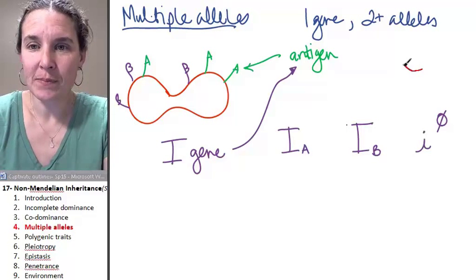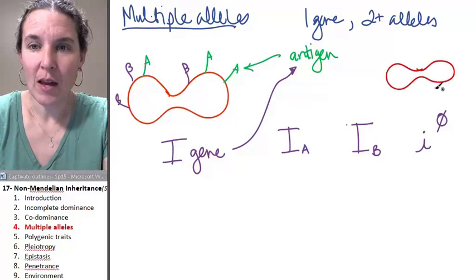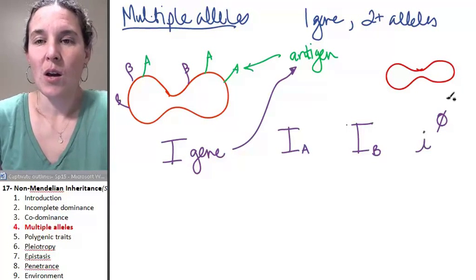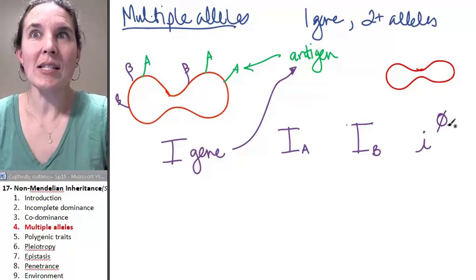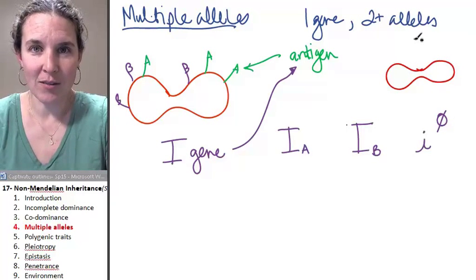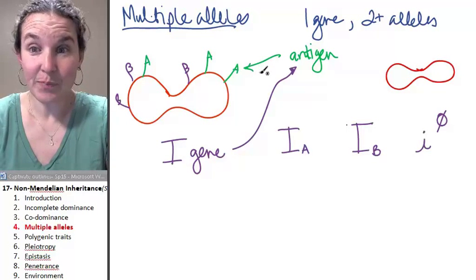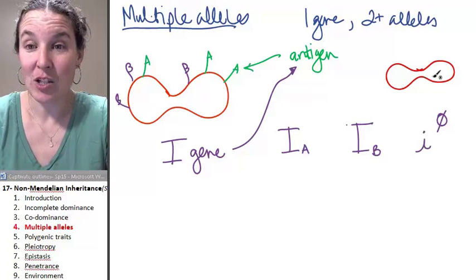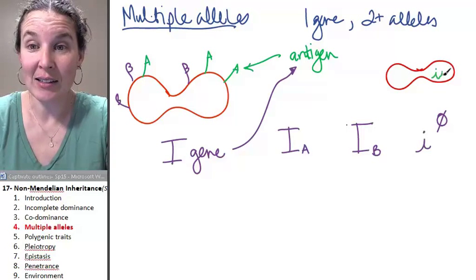I'm going to draw you a blood cell, and you tell me right now what is the genotype of this blood cell right here? Do you see any antigens on it? No. So the genotype has to be little i, little i.